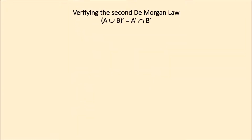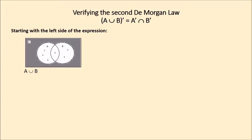Verifying the second De Morgan law: the complement of the union of subsets A and B is equal to the complement of subset A intersection the complement of subset B. Starting with the left side of the expression: subset A union subset B. The Venn diagram shows the elements in the union of both subsets. The numbers that can be read are 2, 3, 4, 6, 8, 9.